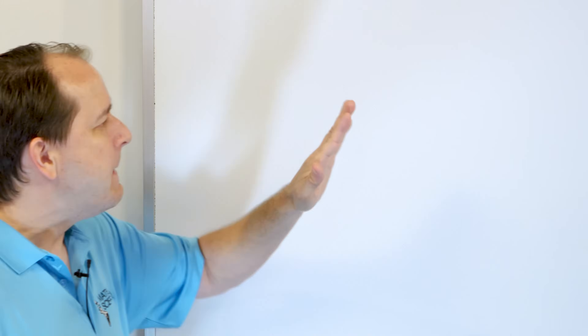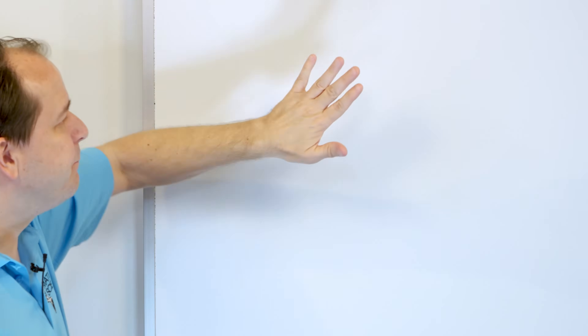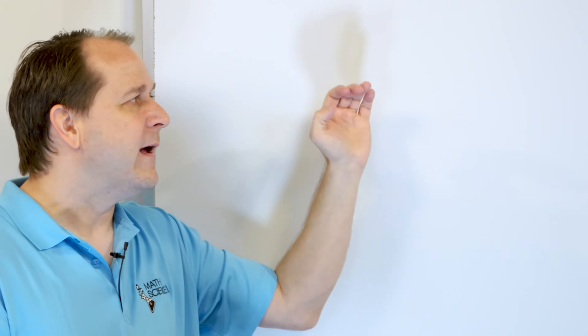These two forces - they occur in pairs, action and reaction - they never act on the same body. They always act on the two bodies that are present in the interaction. For instance, my hand pushes on the board. That is a force from my hand into the board. But the board pushes back into my hand, and that force acts on my hand. The first force acts on the board, and the reaction force acts on my hand. They do not act on the same body.